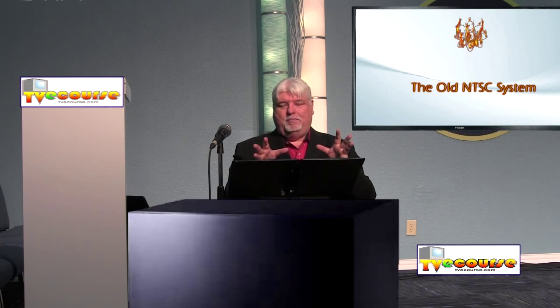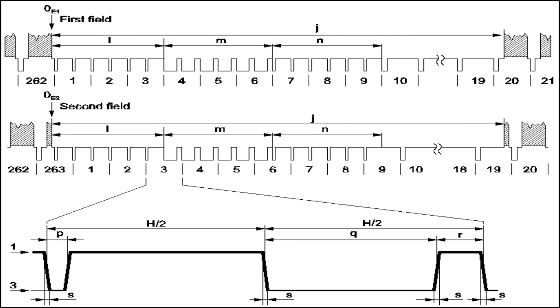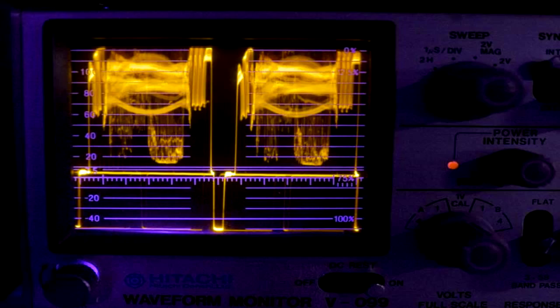That's how that signal relates to a picture you'd see on a waveform monitor, and that's looking at one horizontal line. You could also look at a vertical field or a vertical frame, and you can see all the lines going across on your waveform monitor.